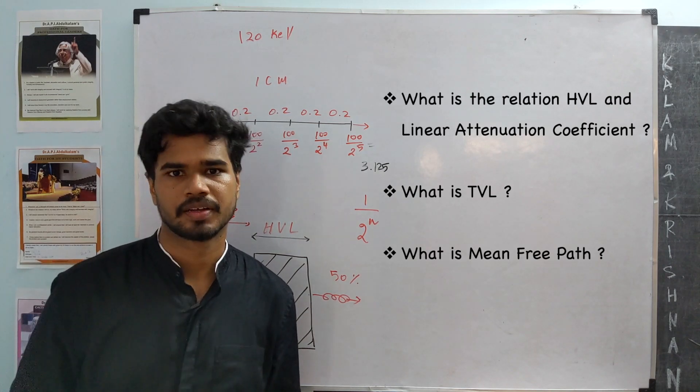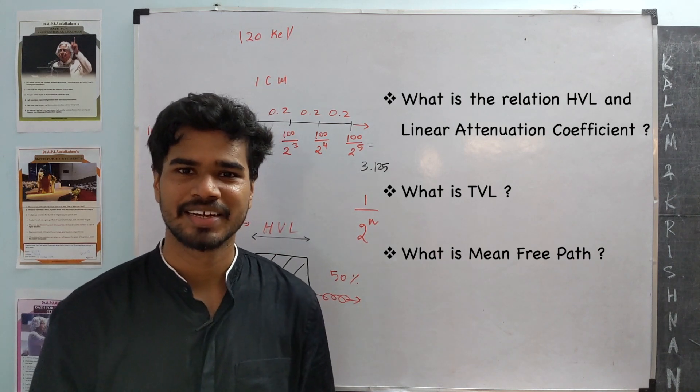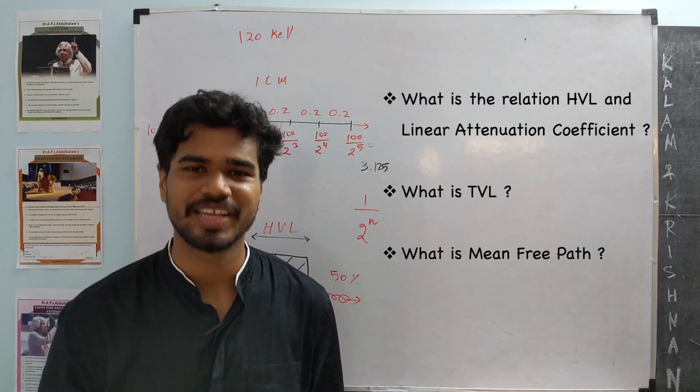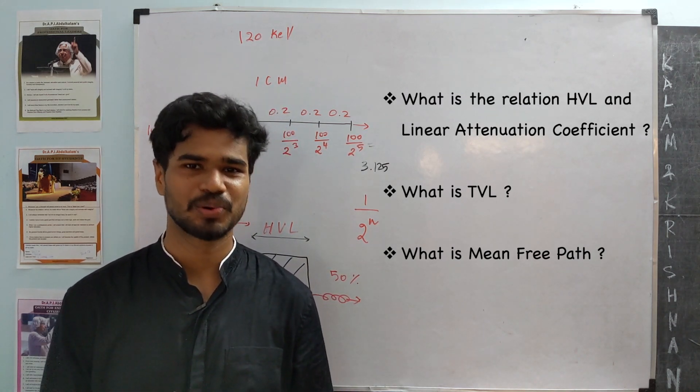Second, similar to half-value layer, there is something known as TVL. Find out what TVL is. It is very simple. Just try to find it.